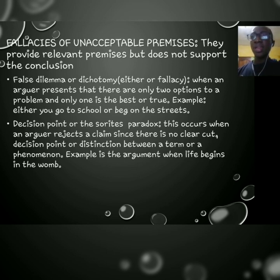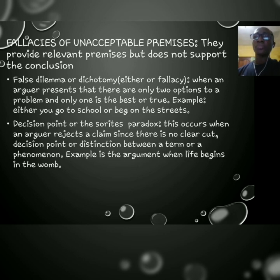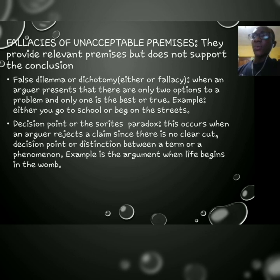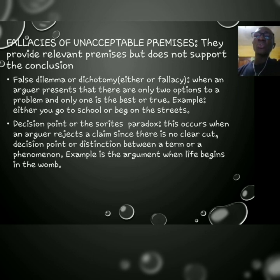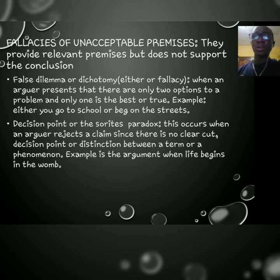The sorites paradox, or decision point fallacy, occurs when an arguer rejects a claim because there is no clear-cut distinction. For example, in the debate about abortion, some say you cannot terminate a fetus at two weeks, others say one week — there is an argument about when life begins. Because there is no universally accepted clear-cut answer, any argument made on the matter may seem false. But the lack of a clear-cut does not mean an argument on that matter is wrong.